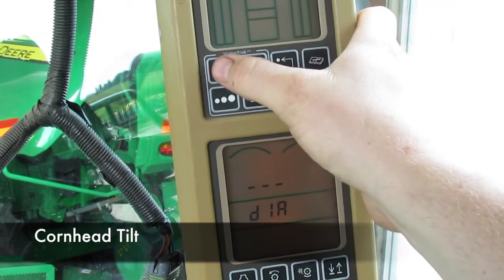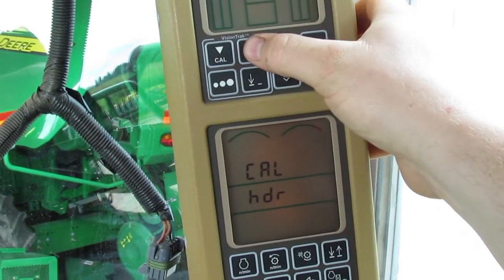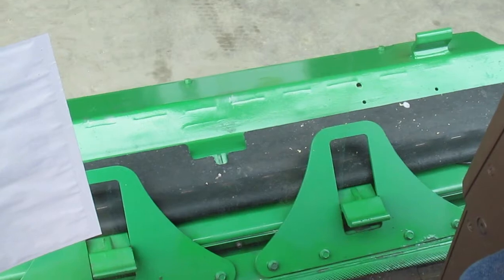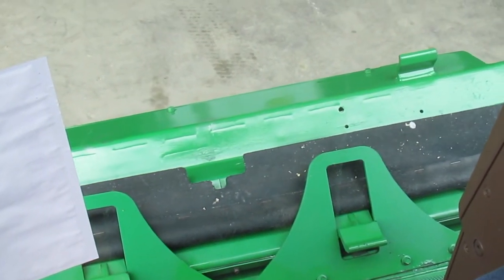Hit diagnostics, cal, scroll up until you find tilt, hit enter. It's going to say left down. Tilt your left header down until it stops.